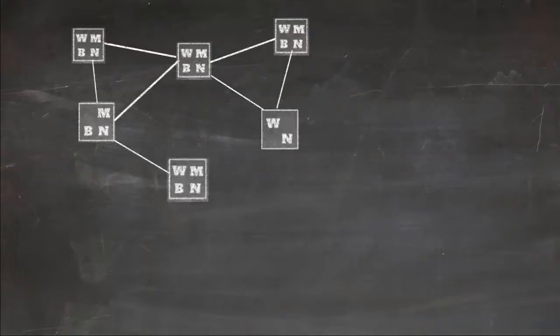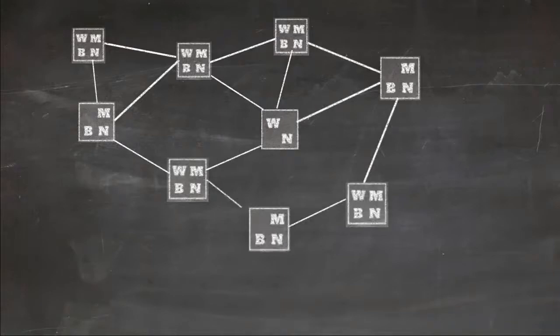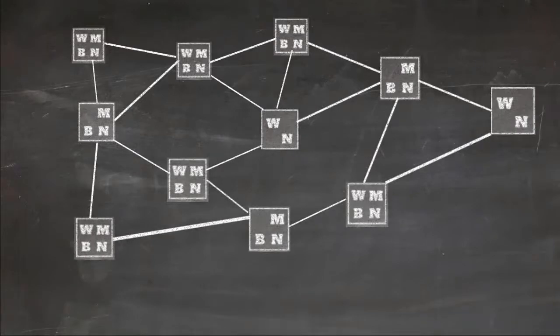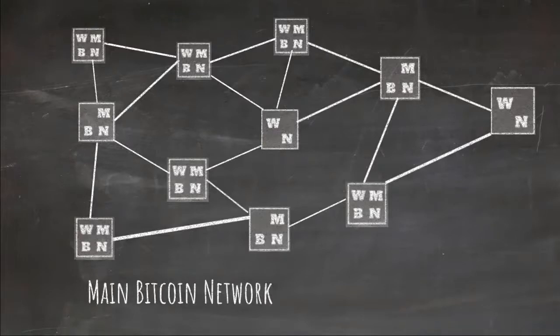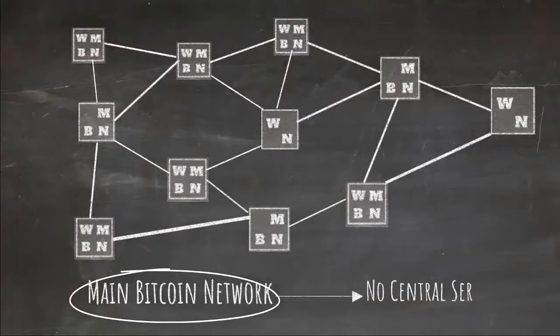We discussed in previous chapter that main Bitcoin network is a flat peer-to-peer network without any central server. This chapter is focused on this main Bitcoin network. So going forward whenever I say Bitcoin network it implicitly means main Bitcoin network which has no central server.